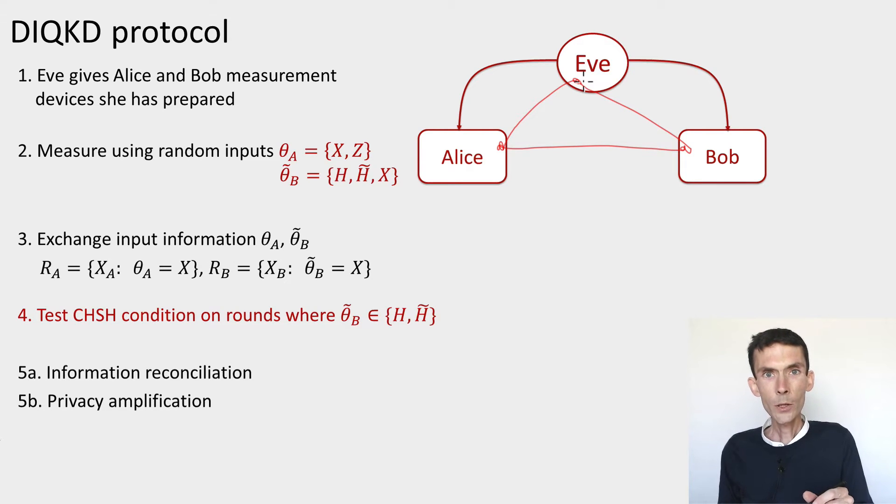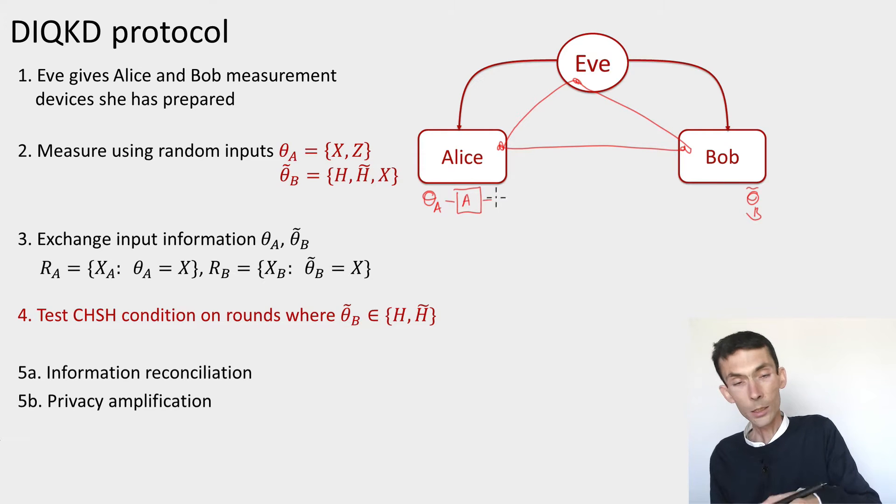At the first step, each of them is going to make a random choice of bases. There's two possible bases for Alice and three for Bob. It's important that this random choice is performed locally. We always consider that Alice and Bob trust their personal random number generators, so that these bases are indeed chosen uniformly at random, and the eavesdropper has no control over this choice. Alice chooses some theta_a, Bob chooses some theta_tilde_b, and they use these bases as inputs inside their devices to generate outputs x_a for Alice and x_b for Bob.